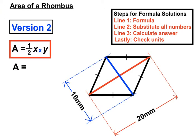We're going to substitute those numbers underneath our formula. We've got area equals half of the X diagonal, which is 20. And the Y diagonal, which is 16. So we're multiplying all those together.